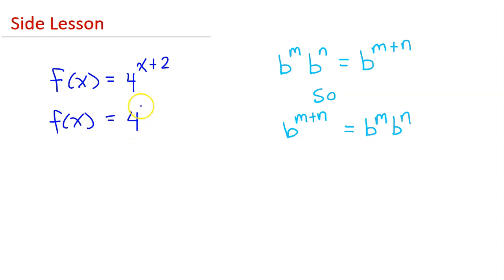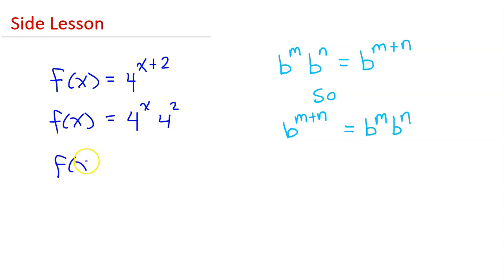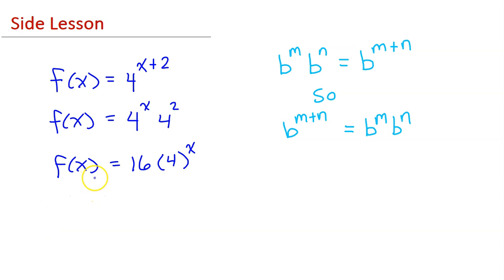This would be the same as 4 to the x power times 4 squared. 4 squared is 16, and I can put that in the front. So f of x could be written as 16 times 4 to the x power.